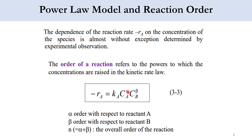Here, α is the order with respect to reactant A, and β is the order with respect to reactant B. The total order is N = α + β. For example, if the total order is 2, it could be α=1, β=1, or α=0, β=2, or α=2, β=0, or some decimal values. Based on these values, the system is classified as elementary or non-elementary. This is the overall definition and simple representation of the power law model.